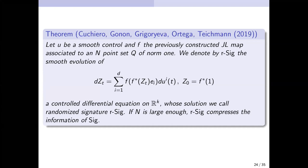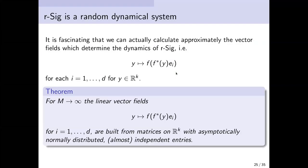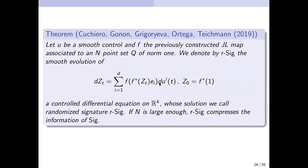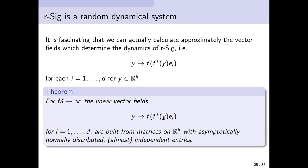This is what we can prove: if N and K are large enough, such a random projection compresses sufficiently many features of the high-dimensional object so that the set becomes almost as expressive as signature itself. Furthermore, when you look at the map F★e_i applied to a vector in R^K, this is a linear map that, from an asymptotic point of view, has the features of a random matrix with normally distributed independent entries. This follows by martingale central limit arguments. It shows that this dynamical system can be constructed without knowing signature, simply by sampling a random matrix.